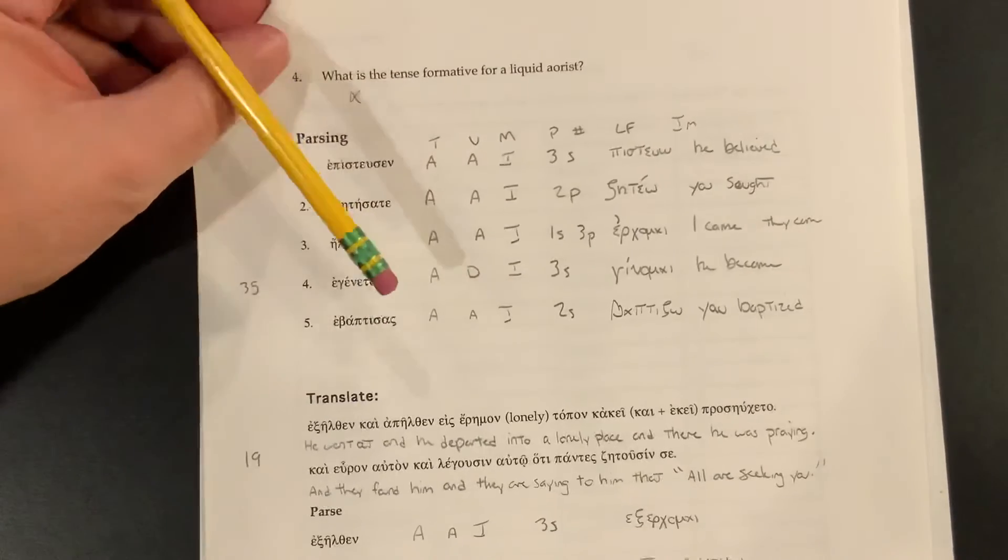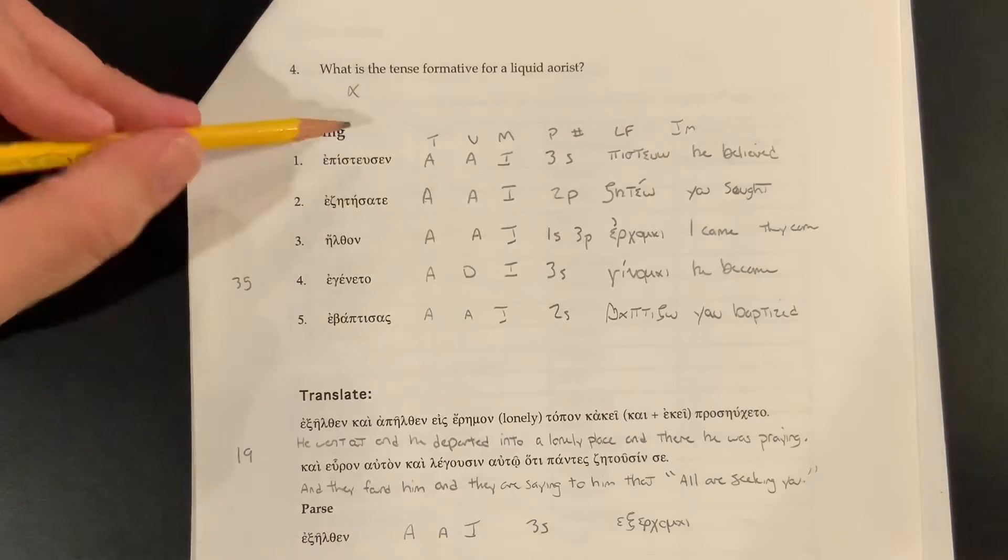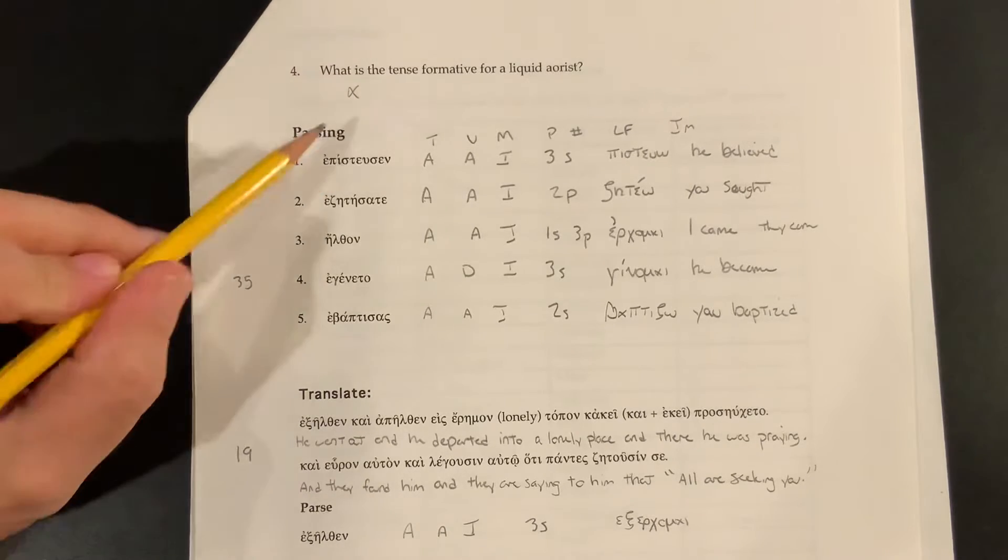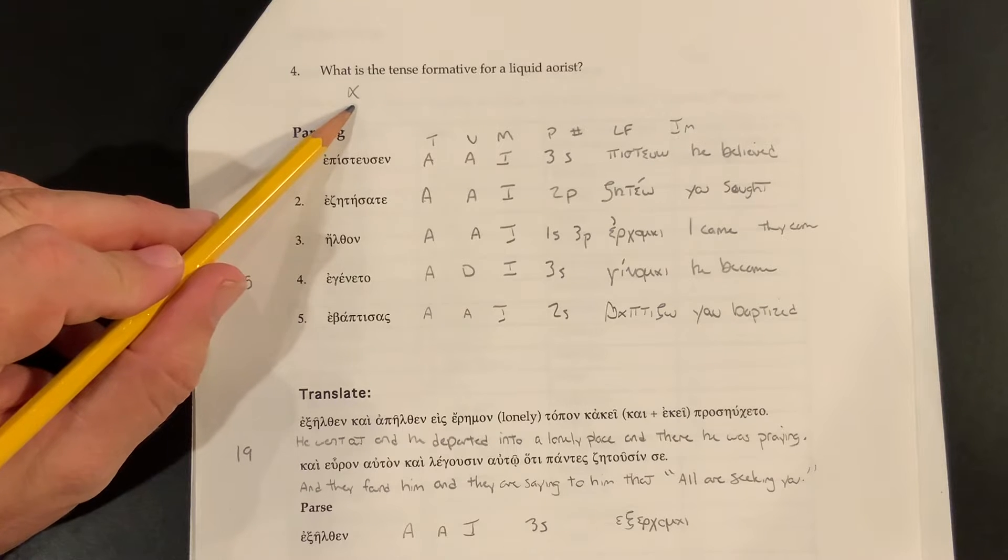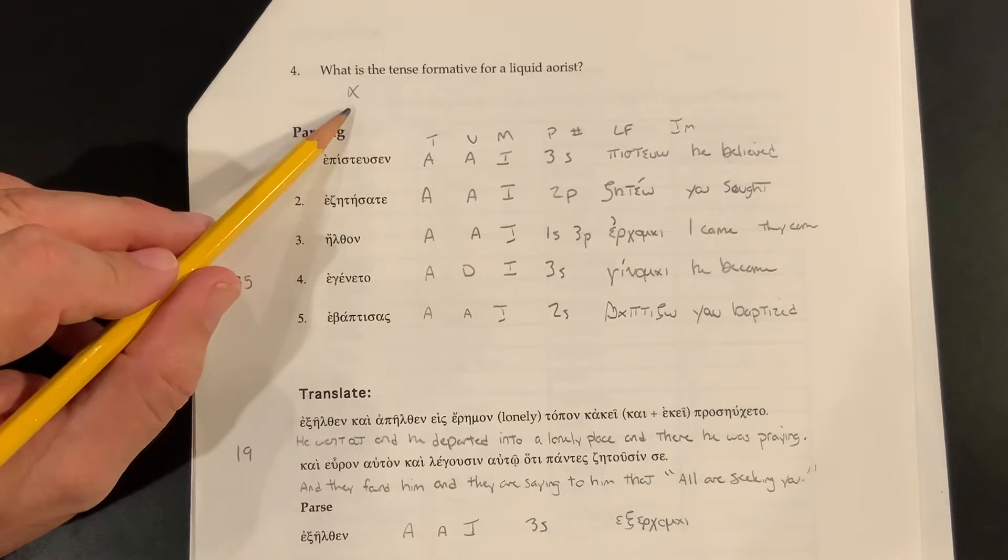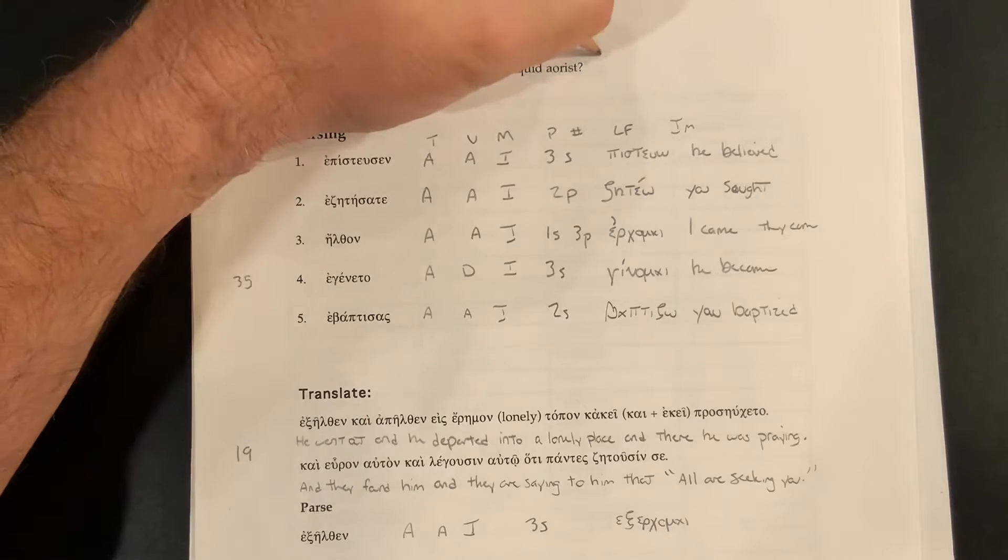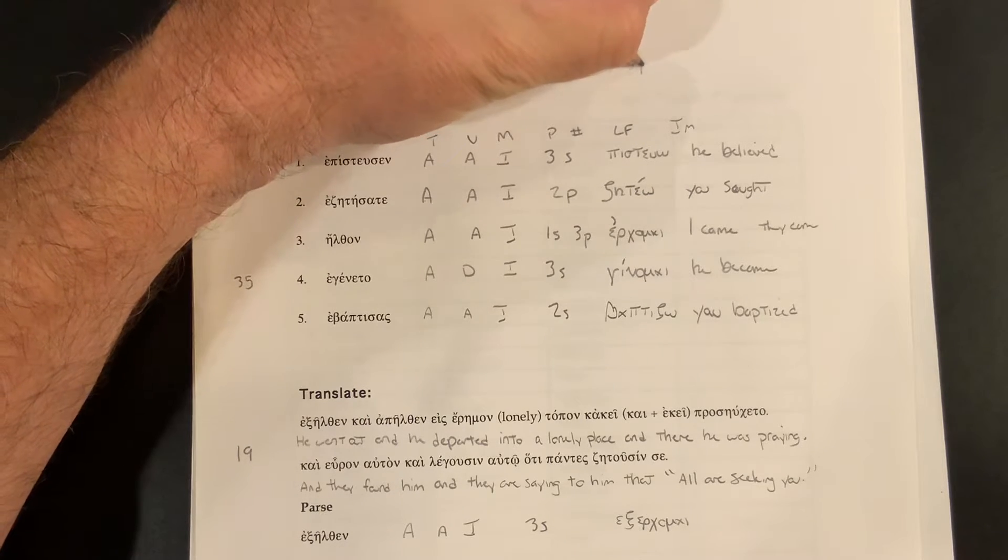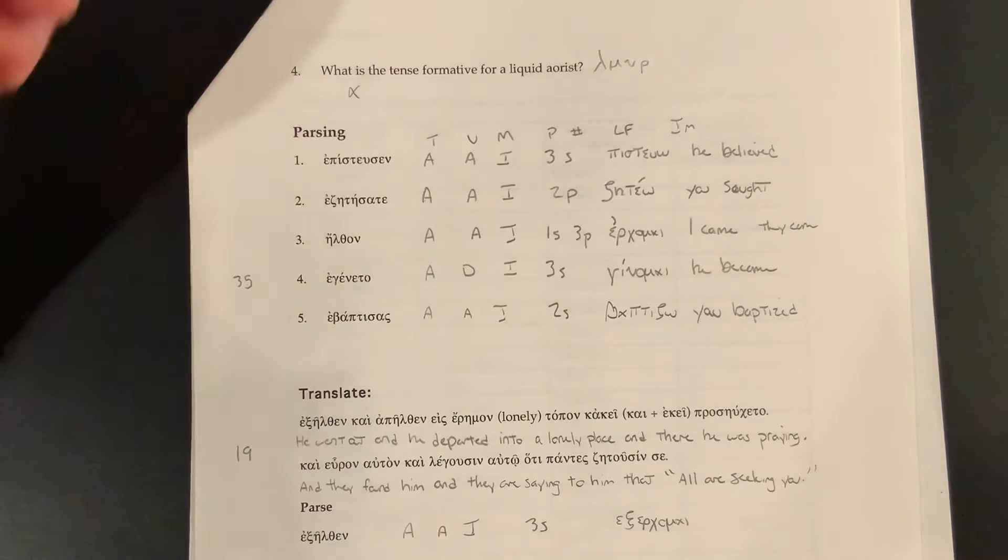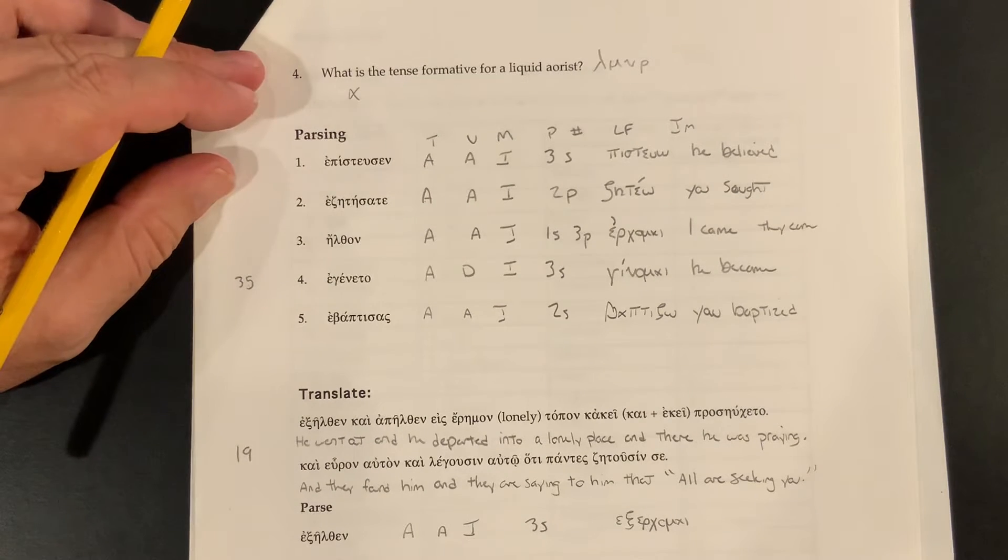What is the tense formative for a liquid Aorist? Not a sigma alpha, just an alpha. So that's all we're looking for there. Liquid Aorist. Liquid Aorists are verbs with stems that end in either a lambda, mu, nu, or rho. Those are liquid Aorists. So there you have that.